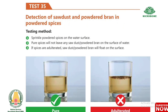Test 35: Detection of sawdust and powdered bran in powdered spices. Sprinkle the powdered spices on the water surface. Pure spices will not leave any sawdust or powdered bran on the surface. If the spice is adulterated, sawdust or powdered bran will float on the surface.